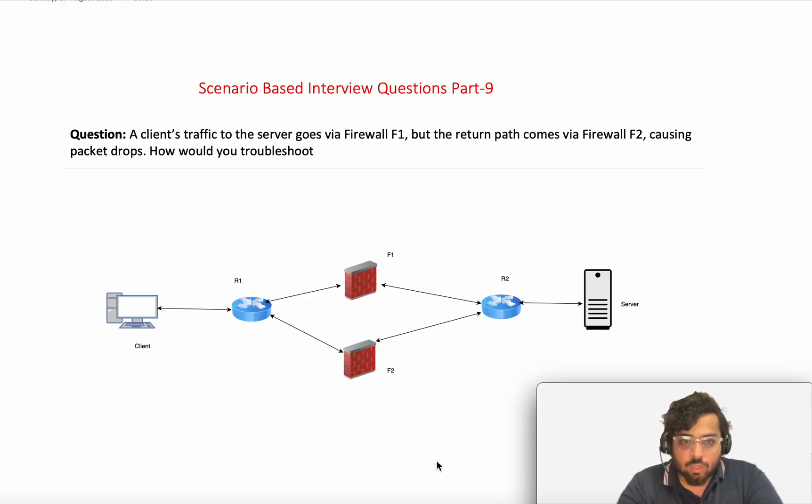So here we have a question. This was asked a couple of times from experienced folks. So the question is: a client's traffic to the server goes via firewall F1, but the return path comes via firewall F2, causing packet drops. How would you troubleshoot? This is a very simple question. You won't be given the diagram - you just have to understand on your own how the path will follow, where exactly the devices can be. So this is a very simplified diagram based on the question.